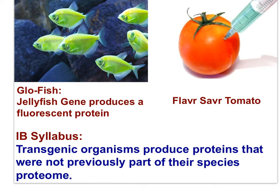Transgenic organisms produce proteins that were not previously part of their species' proteome. The proteome is the entire set of proteins expressed by a species' genome. Transgenic organisms were first reported in the 1970s. The GloFish were the first genetically modified organisms sold as a pet.